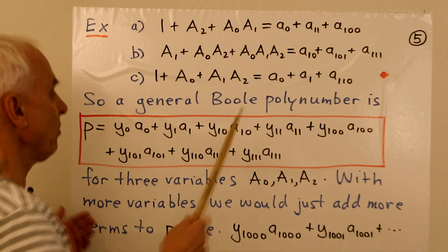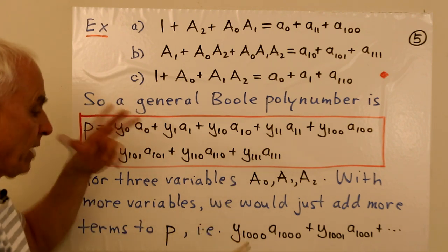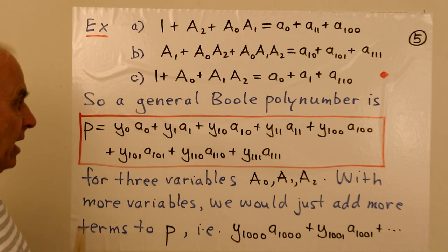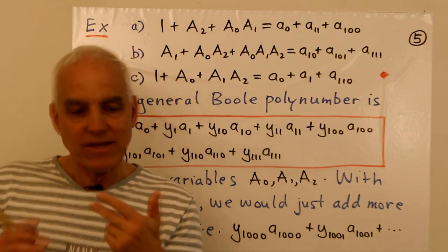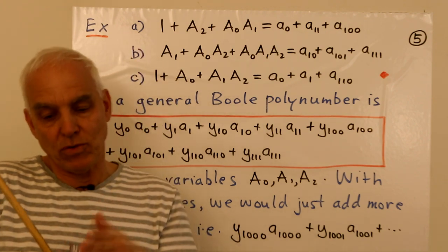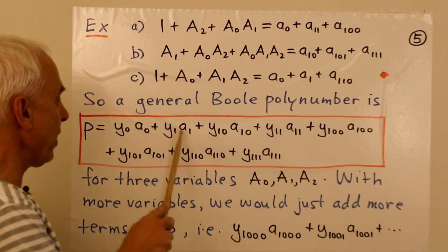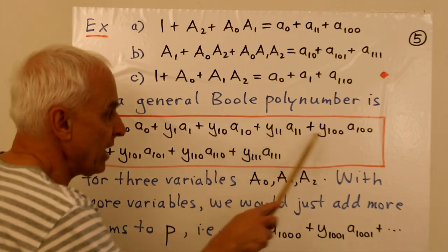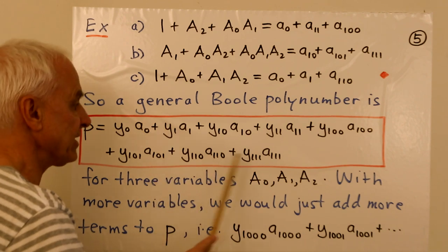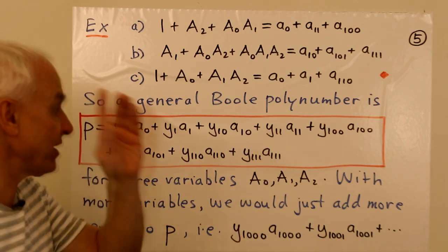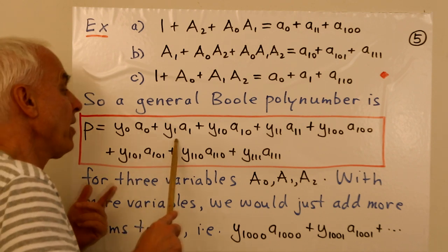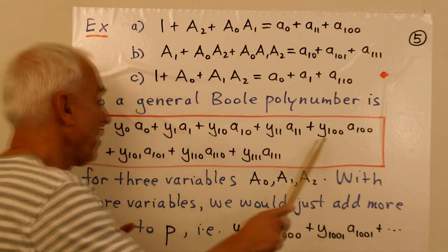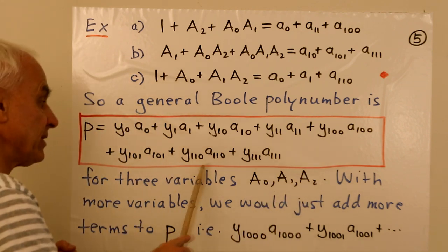So in general, a general Boole polynumber in this context, when we have three input variables, is a linear combination of all these a's. And we're going to express the coefficients by the same labels as the actual terms. The terms are a0, a1, a2, a3, a4, a5, a6, a7 in binary. The coefficients are exactly the same, but we're going to use y's. So y0, y1, y2, y3, y4, y5, y6, y7.